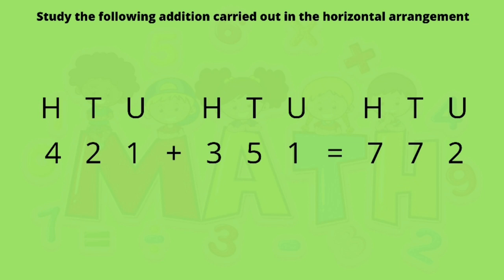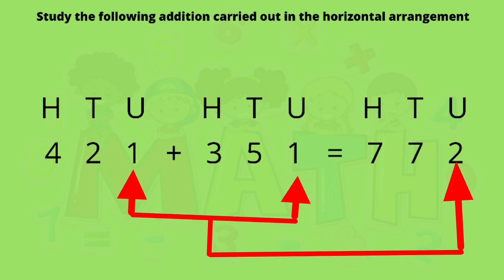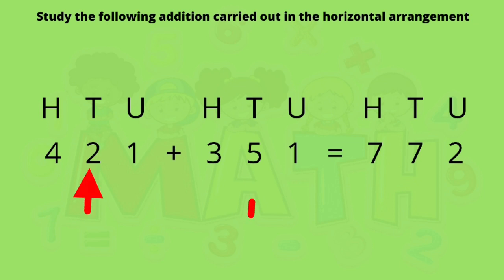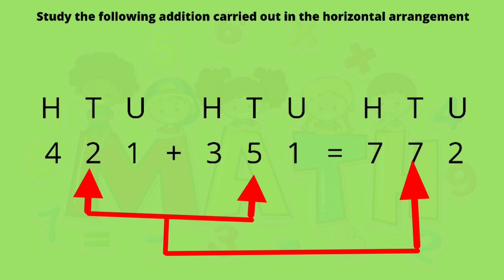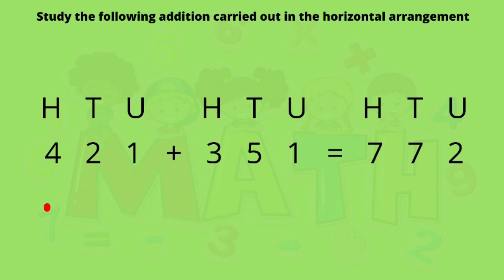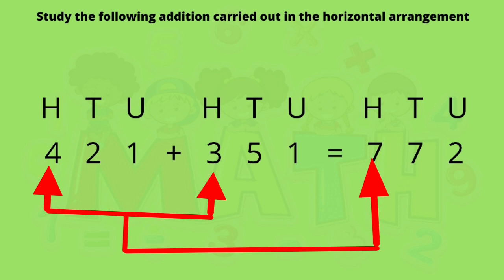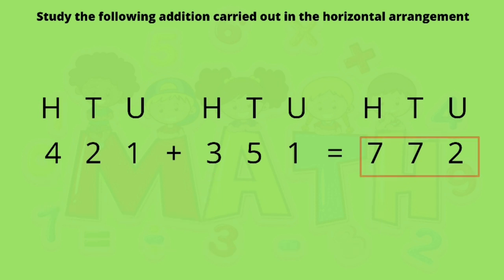Now let us solve another sum. Adding the units: two plus three is five. Adding the tens: two plus five is seven tens. Adding the hundreds: four hundred plus three hundred is seven hundred. So the answer is 772.